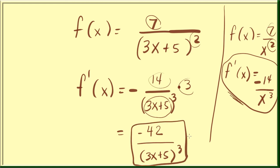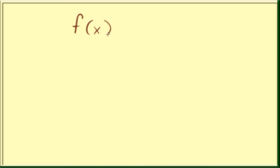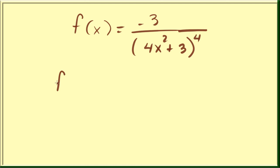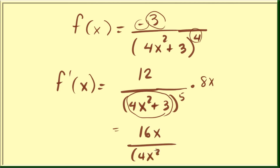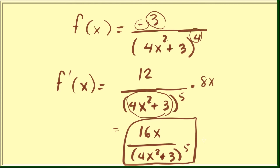One last example: the derivative of negative 3 over (4x² + 3) to the fourth. Switch the sign — now positive. 3 times 4 is 12, over (4x² + 3) now raised to the 5th (adding 1 to the 4th). Multiply by the derivative of the base (4x² + 3), which is 8x; the derivative of the constant is 0. So the final answer is 96x over (4x² + 3) to the fifth. Very easy — I hope you learned something from this tutorial, thanks for watching!